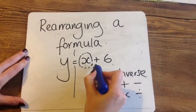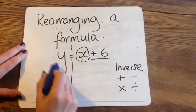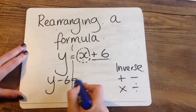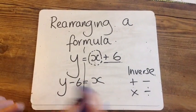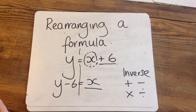Let's do it then. Let's move this 6 to the other side of the equals. And you've finished, because X is on its own.